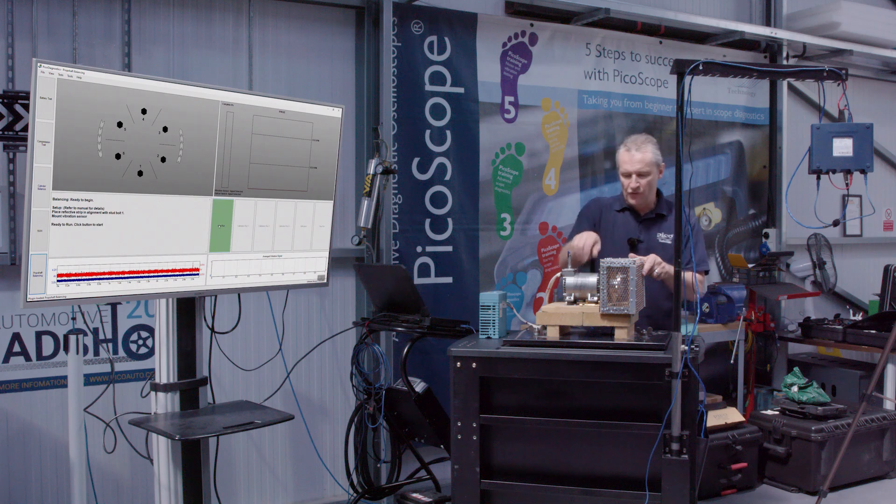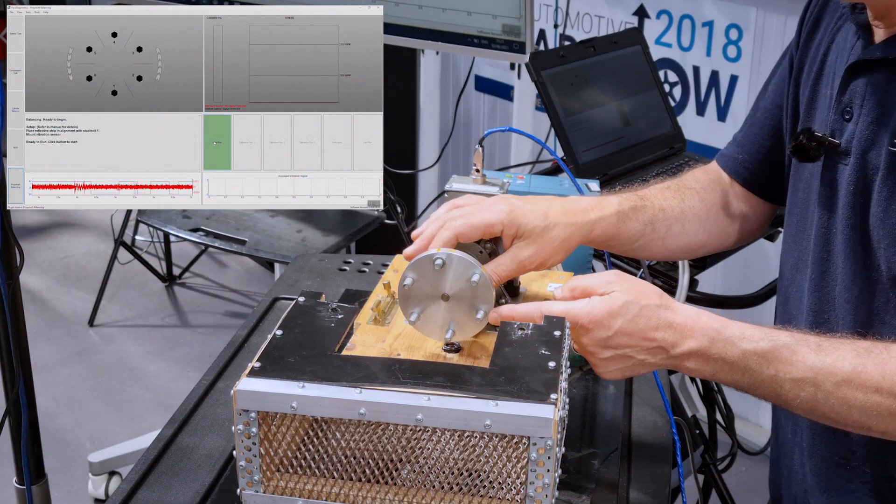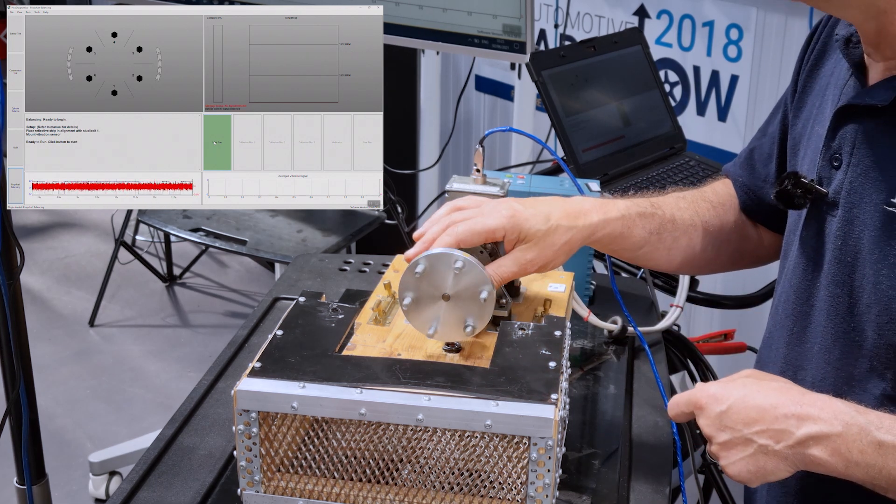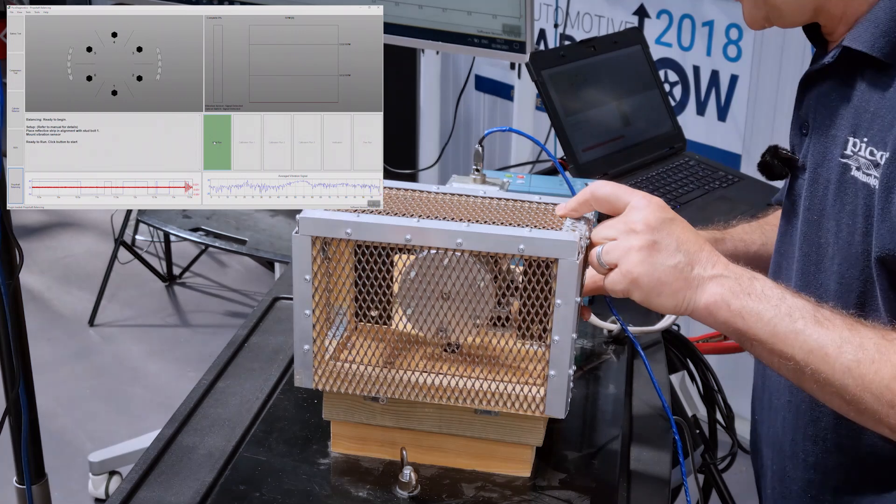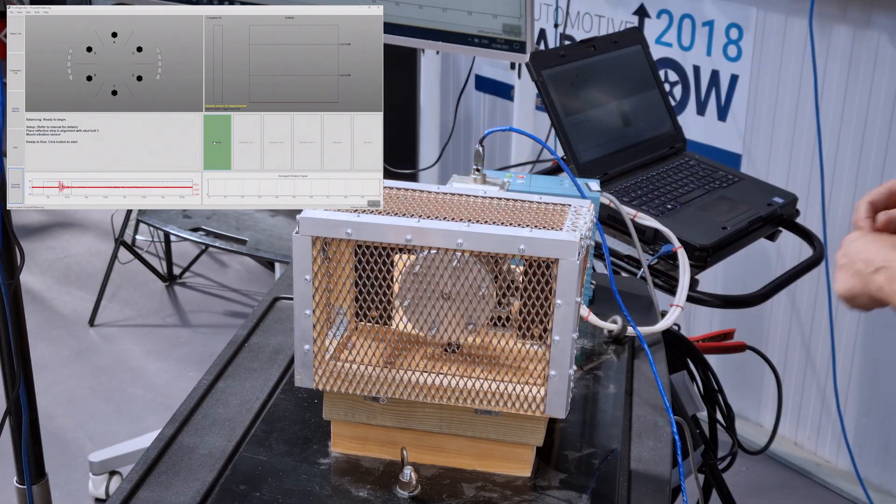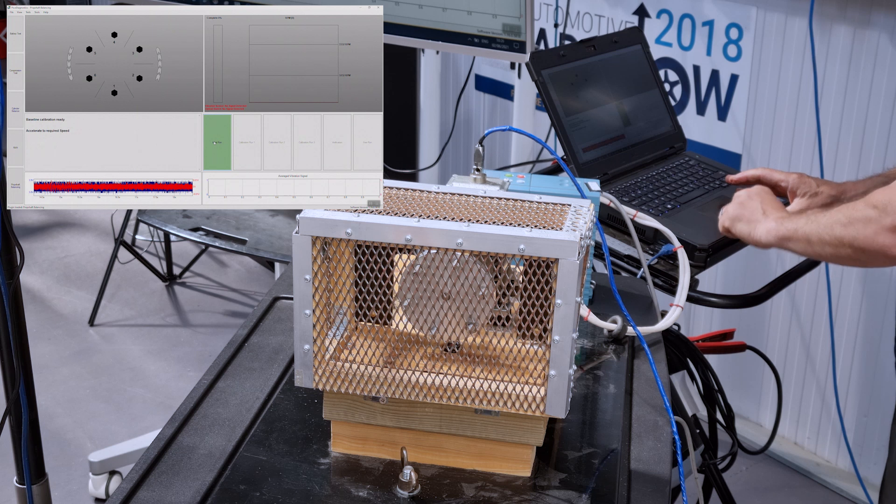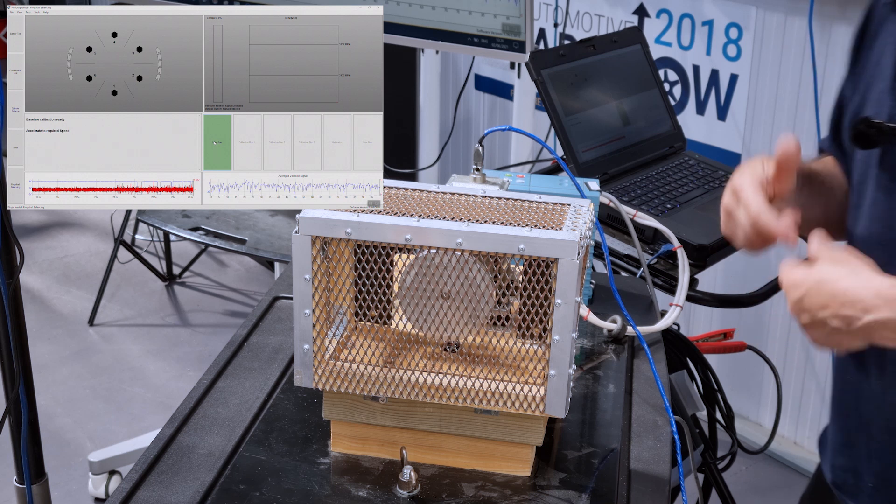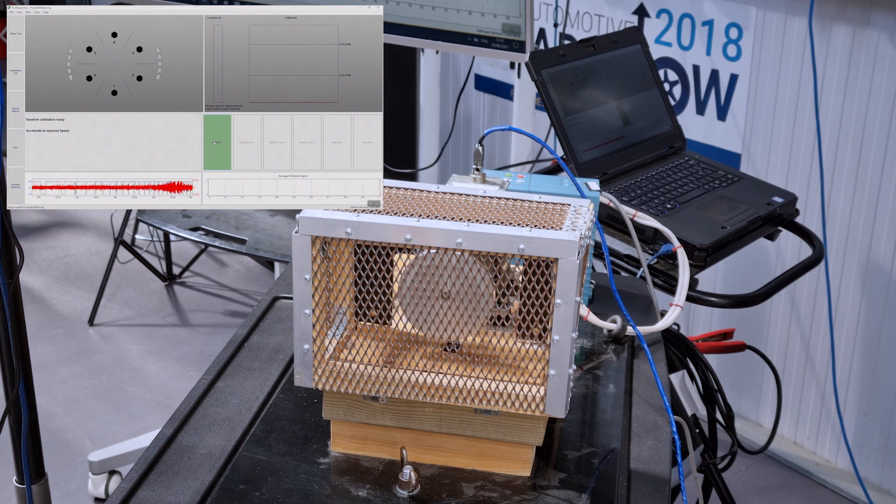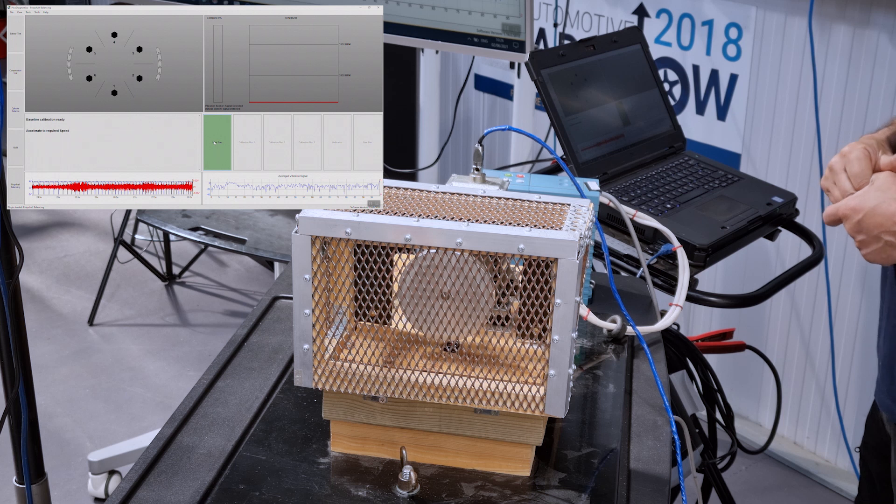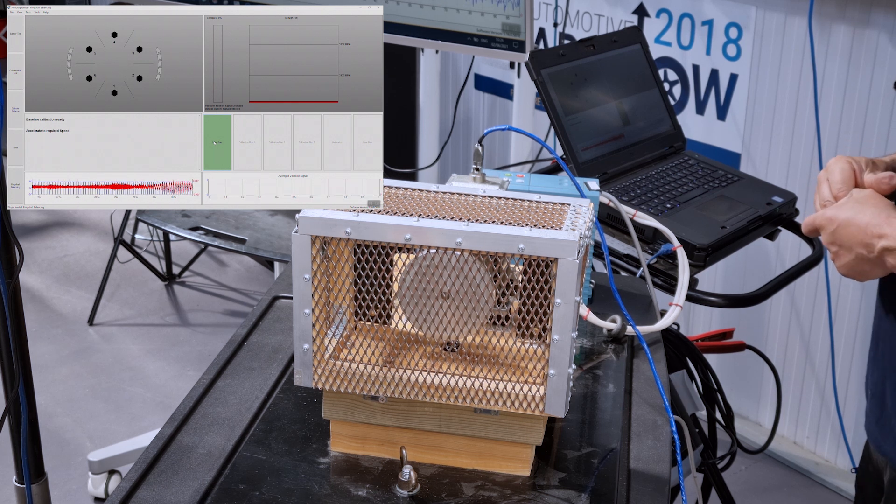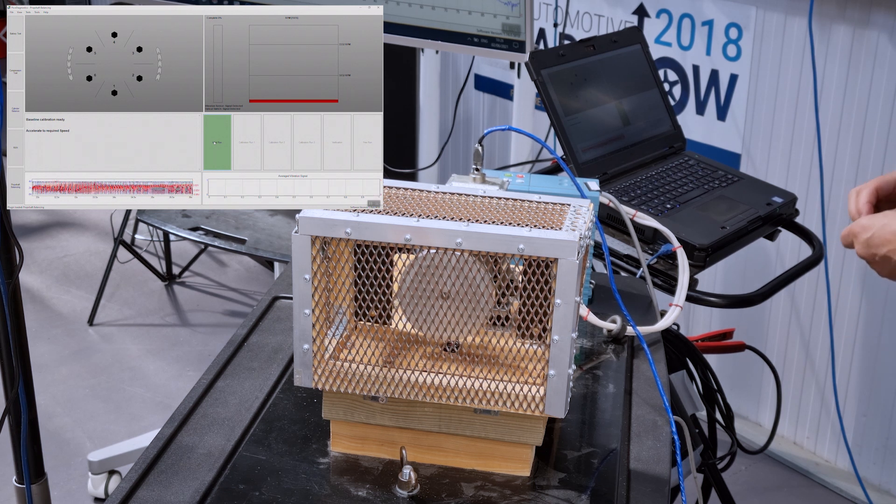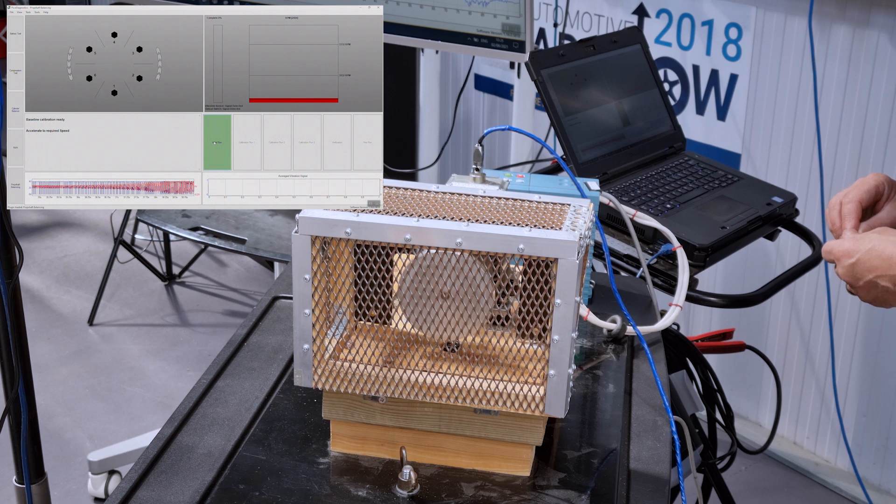So, before I move on, just to show you once more, there is a deliberate imbalance on this flange. So, on bolt number one, we have a five gram nut. And our first run is our initial run. So, we click on initial run and we'll simulate the shaft turning. In the real world, this would be somebody in the vehicle on the lift now driving this shaft and aiming for that optimum speed of about 3200 RPM. The software is now taking an initial measurement of the vibration level.